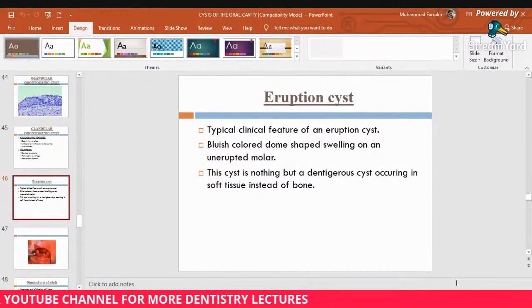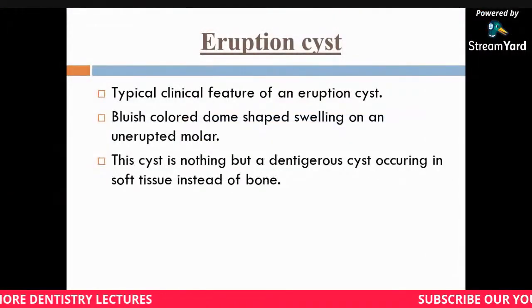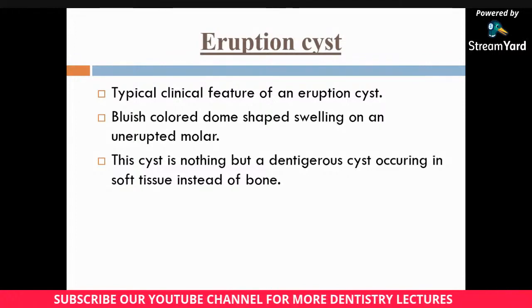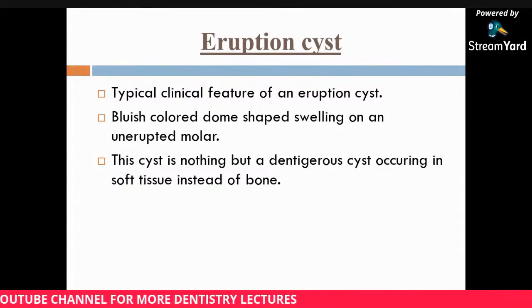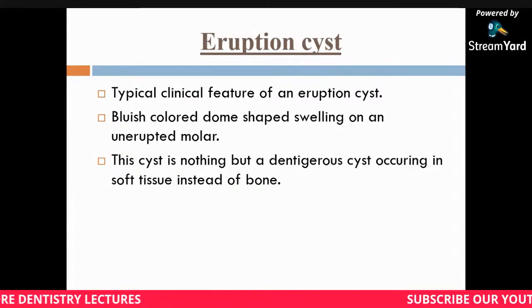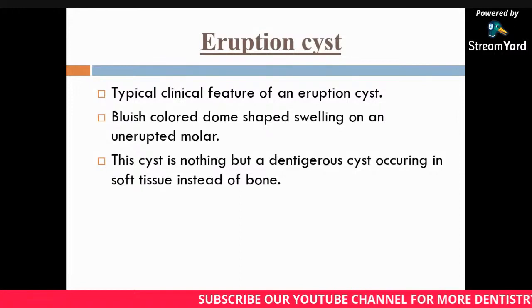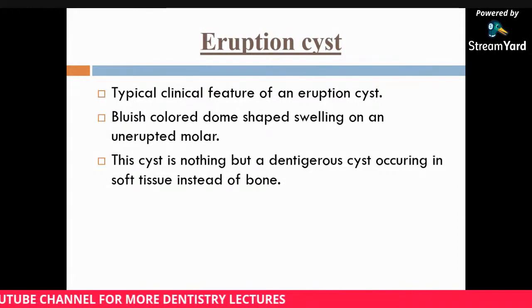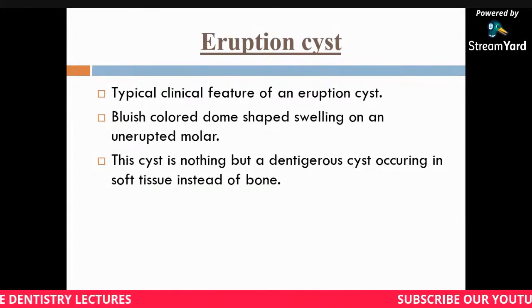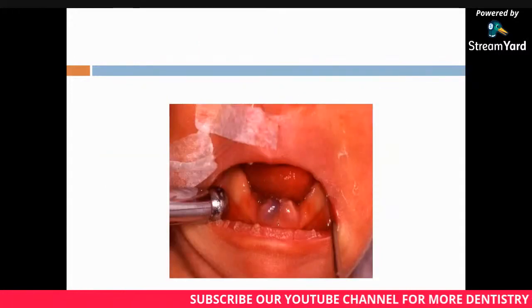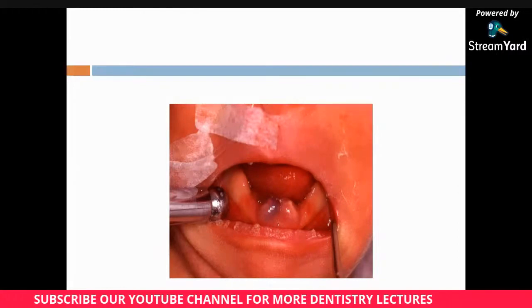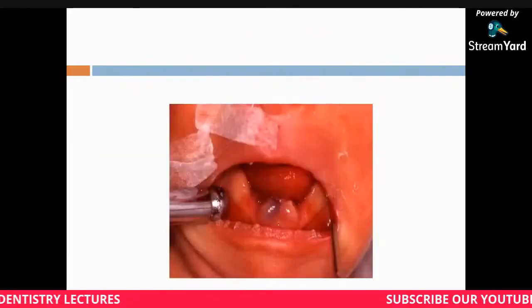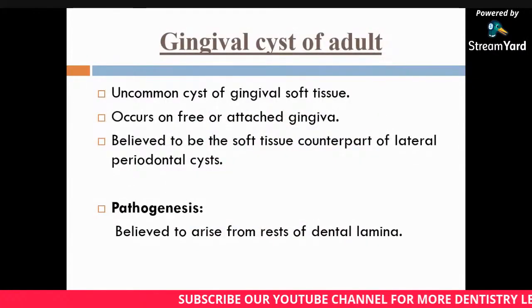The eruption cyst shows a bluish dome-shaped swelling on the mucosa overlying an unerupted molar. This cyst is essentially a dentigerous cyst occurring in soft tissue instead of bone, presenting as a blue dome-shaped swelling on the soft tissue rather than within bone.